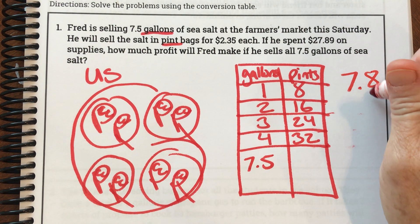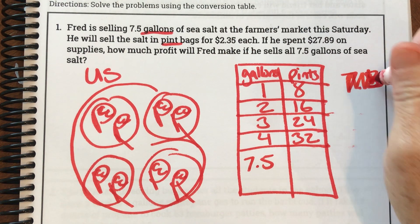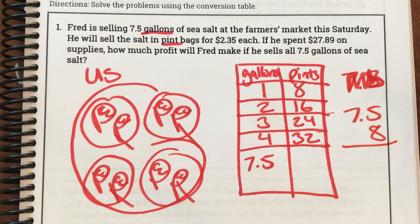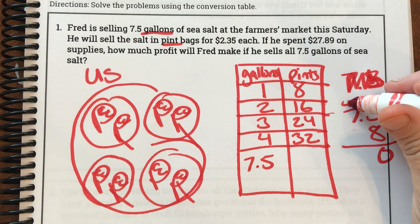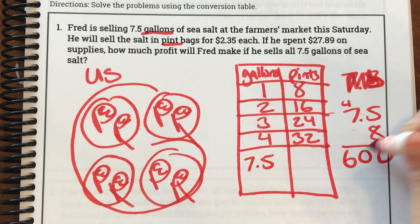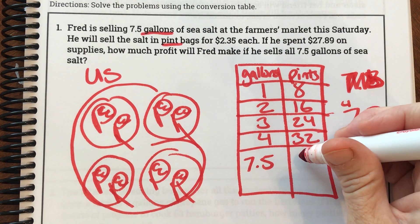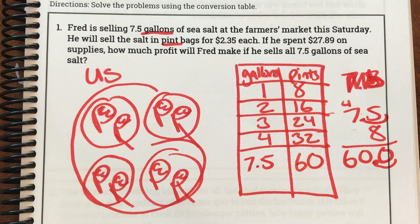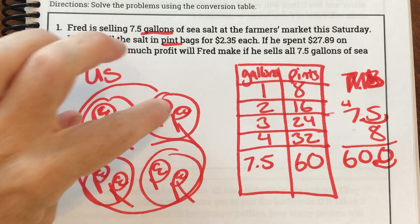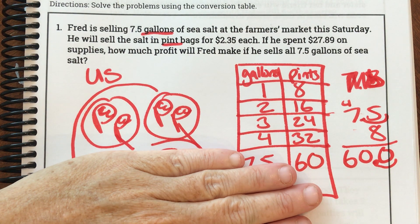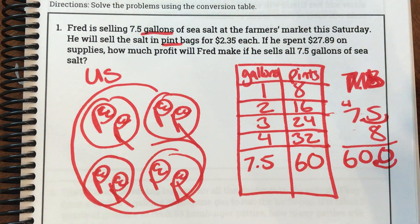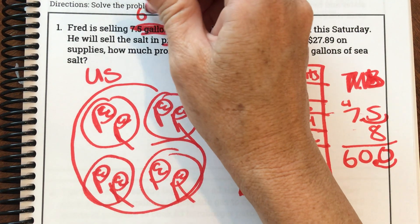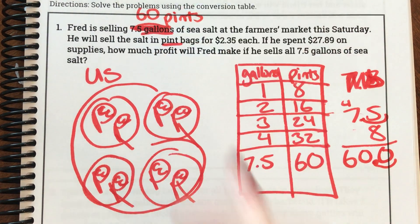Let me solve 7.5 times eight. Eight times zero is 40, write zero carry four. Eight times seven is 56 plus four is 60. So 7.5 gallons has 60 pints. I also could have figured it out by looking at half a gallon having four pints. There are a few ways to figure that out, but it's important to know so we don't have different measurements. Now I can cross that off and solve.